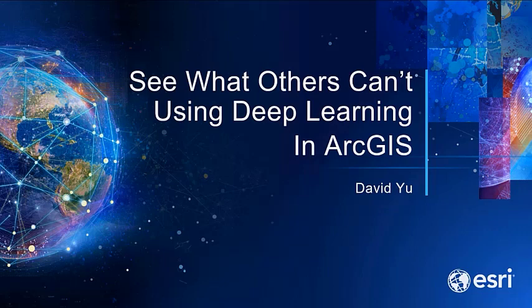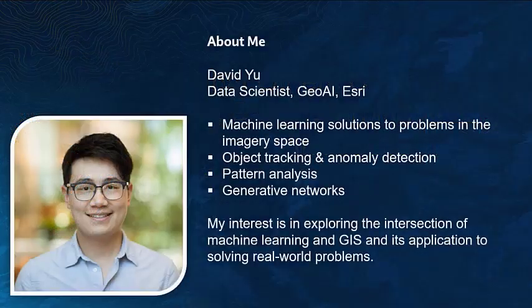First off, a little bit about myself. My name is David Yu. I'm a data scientist on the GeoAI team here at Esri. My background is in computer science, whereas Esri had traditionally been a GIS company. I spend a lot of my time trying to bring the latest and greatest tools and technologies, processes, and practices from the world of machine learning to solve real-world GIS problems. In particular, I work on things like object tracking and anomaly detection, pattern analysis, and more recently, generative networks.